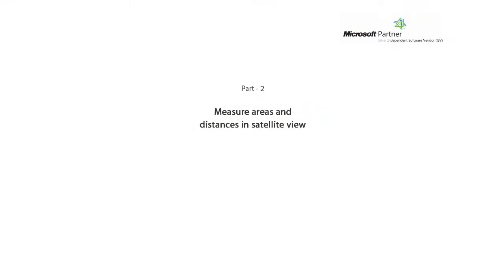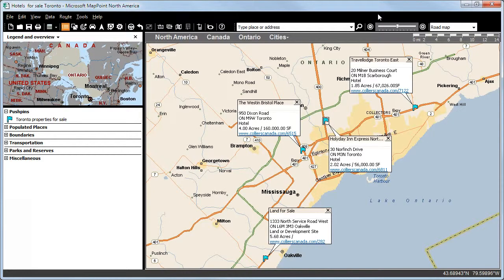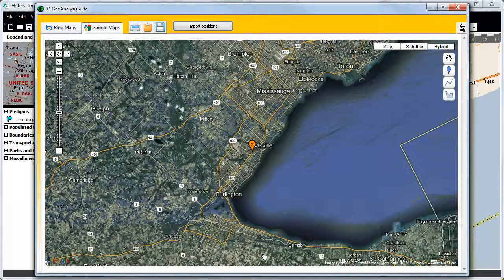Part 2: Measure Areas and Distances in Satellite View. IC Interactive Viewer offers an excellent possibility to measure properties and buildings. We will now click on the pin Land for Sale and again press CTRL and the left mouse button. The IC Interactive Viewer opens.